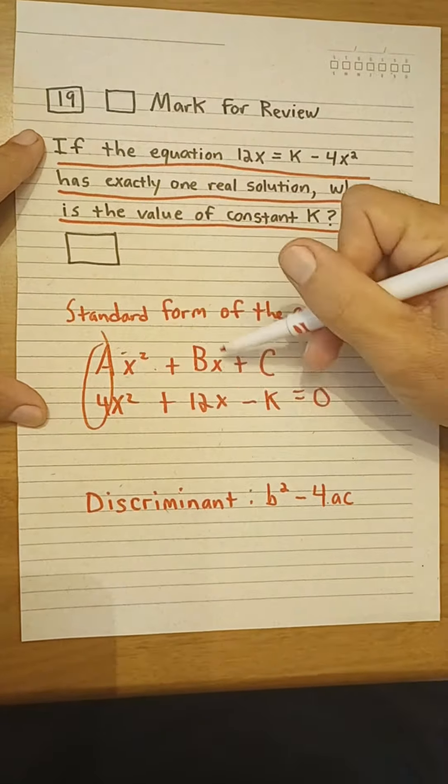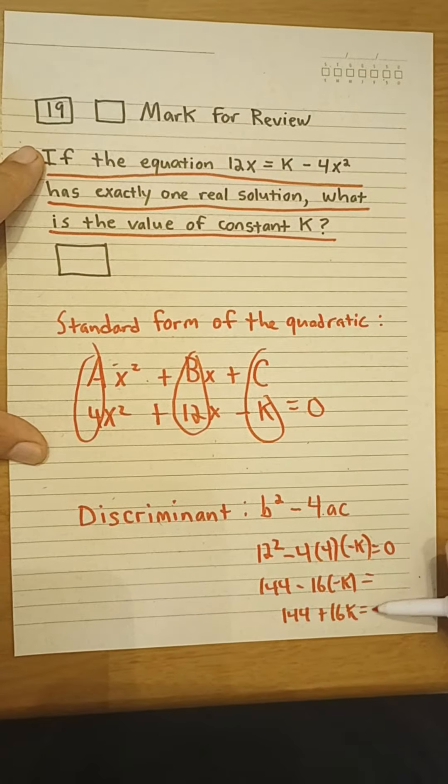144 minus 16 times negative k, which is 144 plus 16k equals zero.